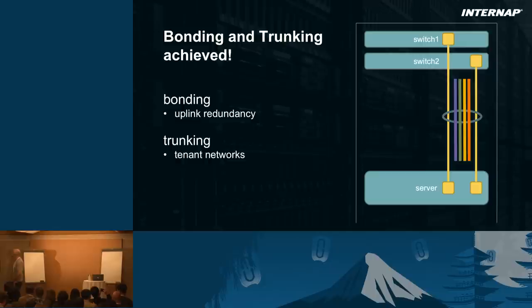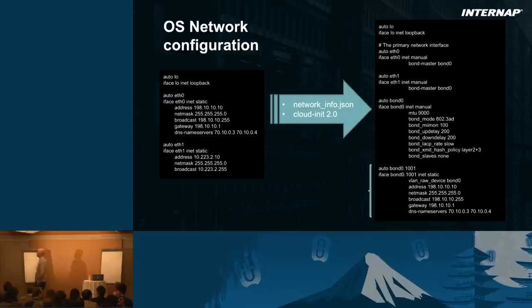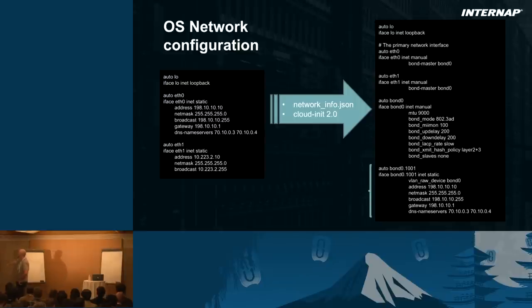All the networks the customer chose at Nova boot or interface attach/detach will be trunked in the link aggregation — standard stuff, but automated through Ironic. Another problem was the operating system network configuration. On the virtual machine side, that's been in OpenStack for a long time. But with bonding, we need information about the VLANs or provider networks, which wasn't available. We had to switch to a new format to pass this information to the config drive network info, and it required cloud-init 2.0 to properly configure the network reflecting what was asked by the customer at boot time.